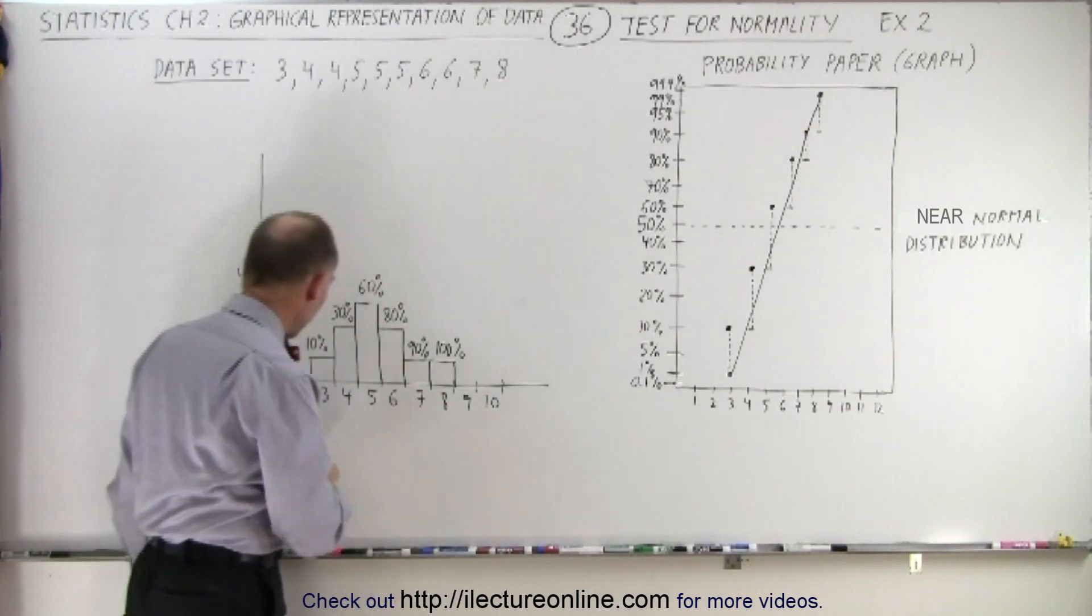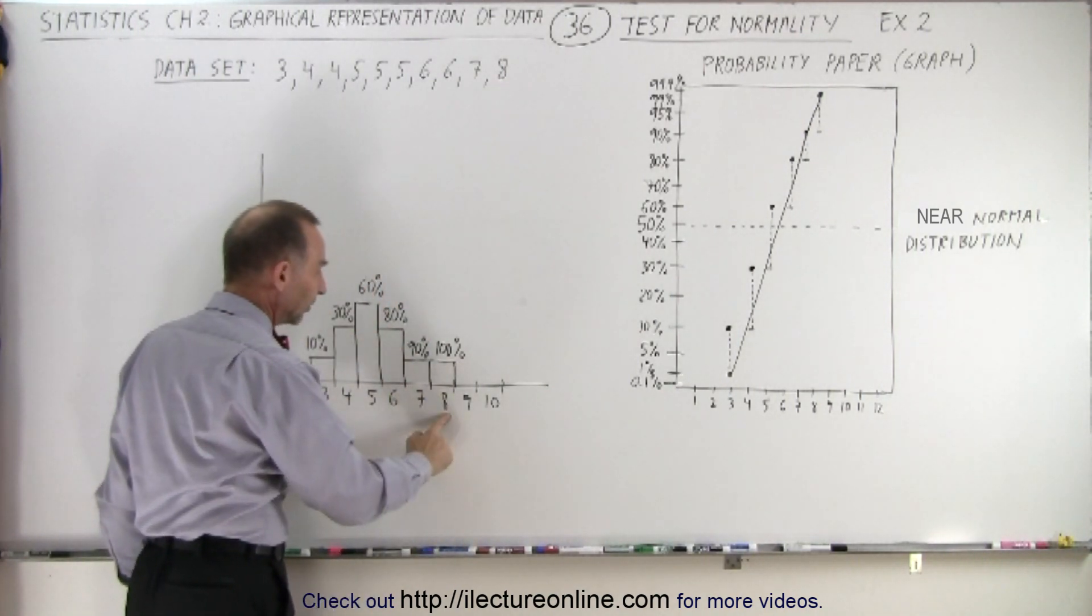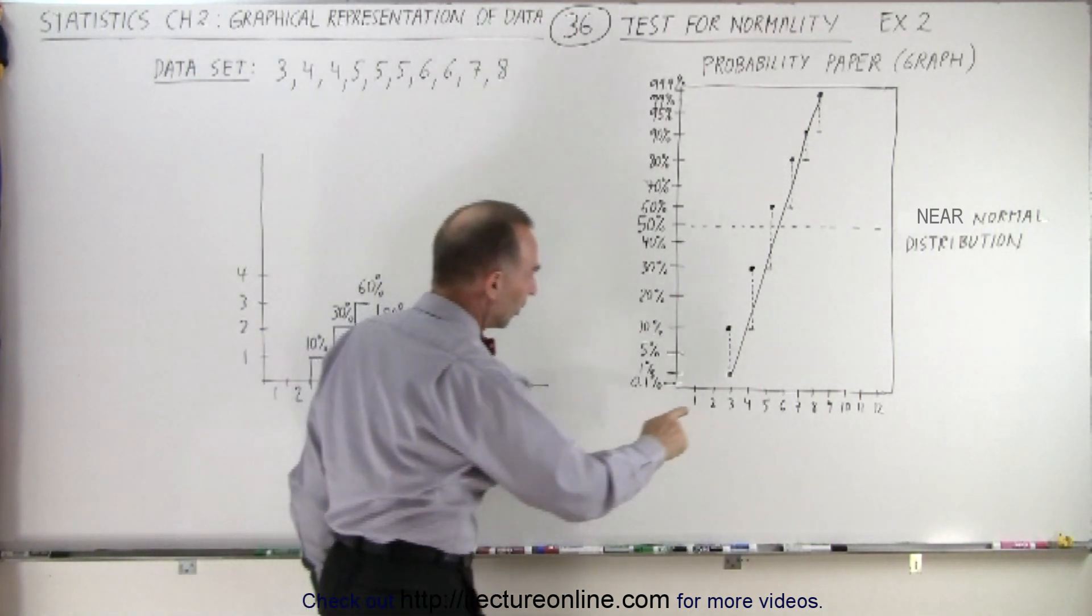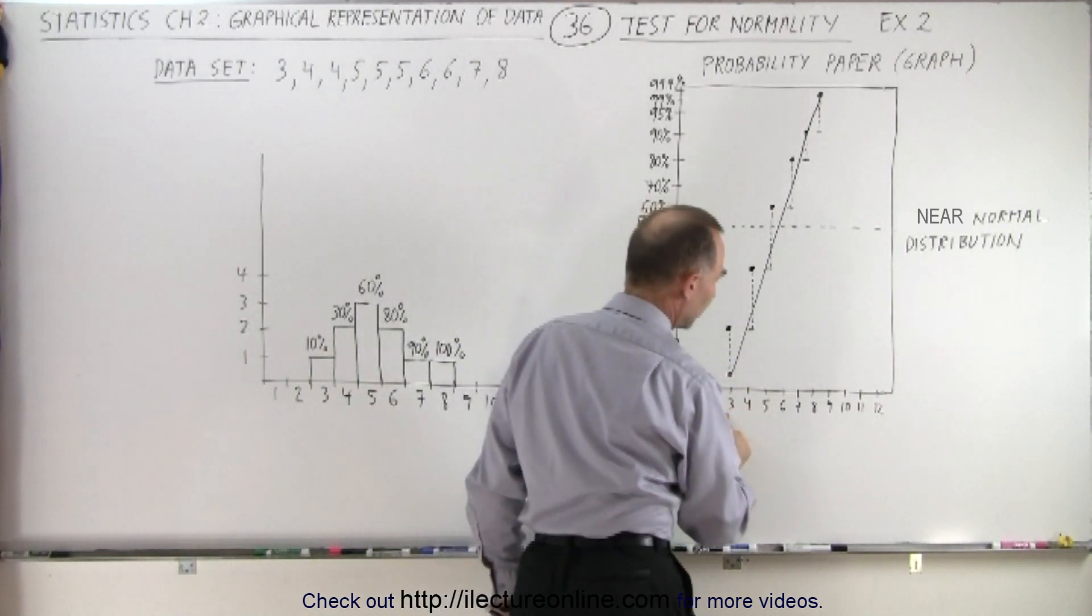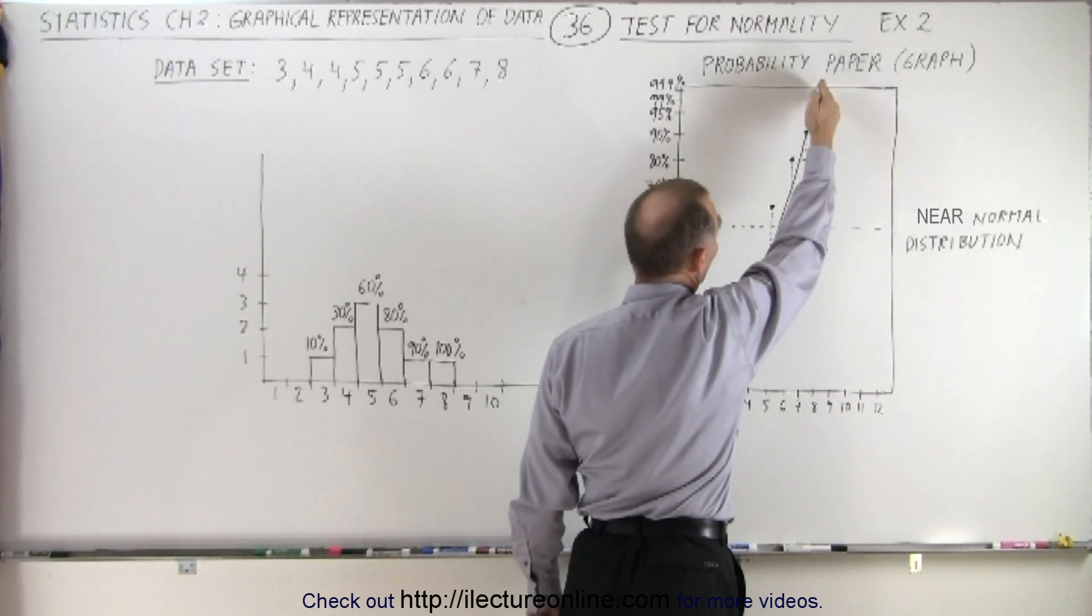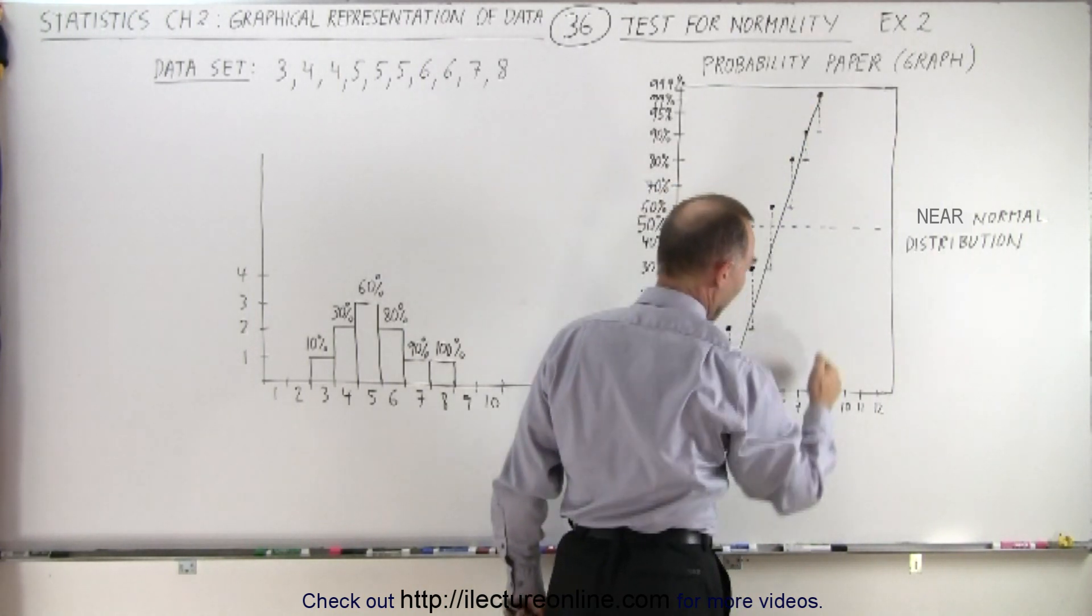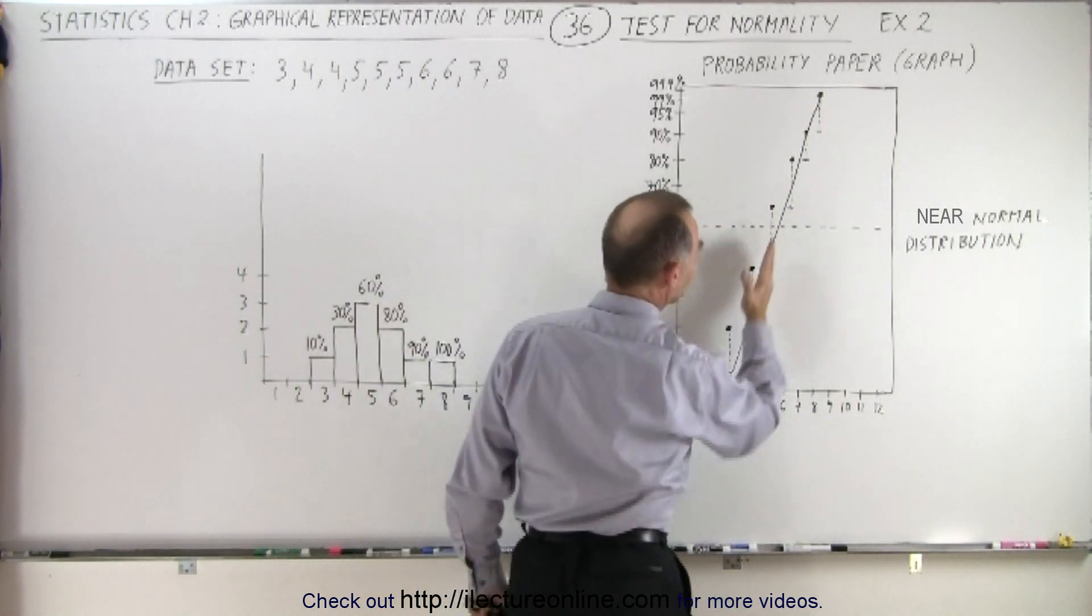So then you find your initial and final data points, 3 and 8. You put a point down around 0.1 or 1% for the 3, and around 99 or 99.9% for the 8. Then you draw a straight line across.